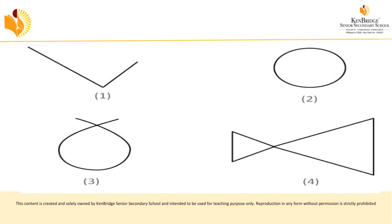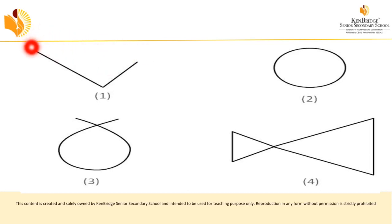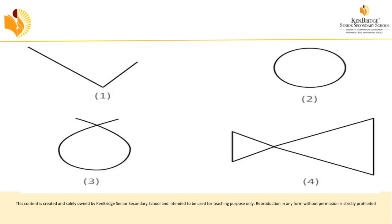Looking at more pictures of closed and open curves: some are open and some are closed. The starting point and ending point of a closed curve join together. If the starting point and ending point are not joining together, that is called an open shape or open curve.